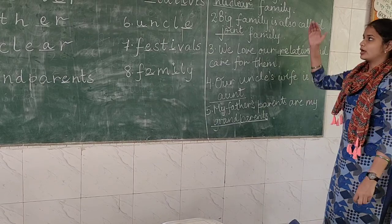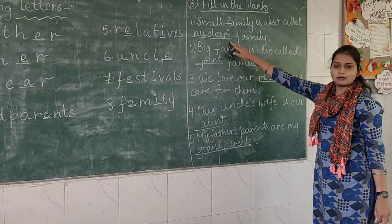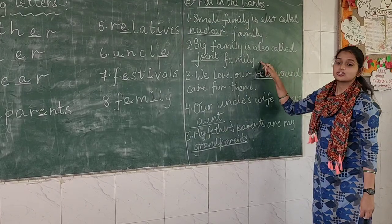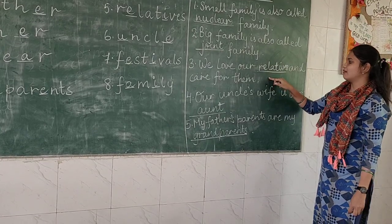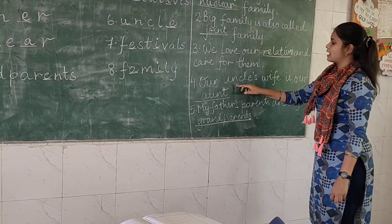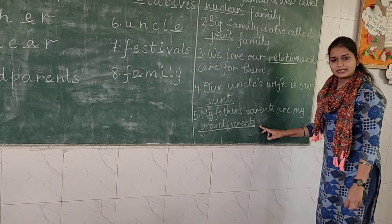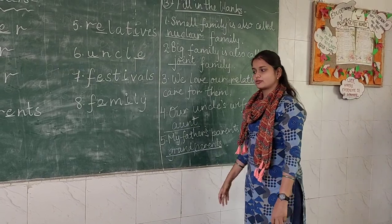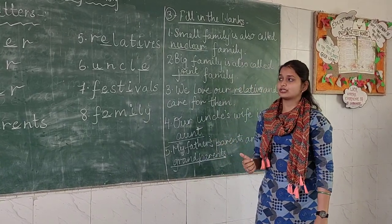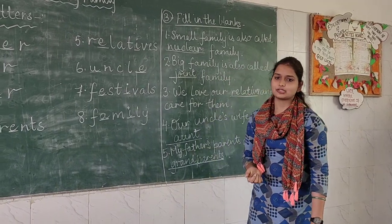Once again, here are all five fill-in-the-blank answers. First: small family is also called nuclear family — N-U-C-L-E-A-R. Second: big family is also called joint family — J-O-I-N-T. Third: we love our relatives and care for them — R-E-L-A-T-I-V-E-S. Fourth: our uncle's wife is our aunt — A-U-N-T. Fifth: my father's parents are my grandparents — G-R-A-N-D-P-A-R-E-N-T-S. That is all for today, children. Please make sure you complete this work on time and start learning. Bye-bye, take care, stay active and stay safe.